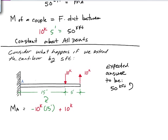Plus 10 kips times 20 feet. Okay, and that's positive because it's going in a counterclockwise sense. And if we do the math on here.